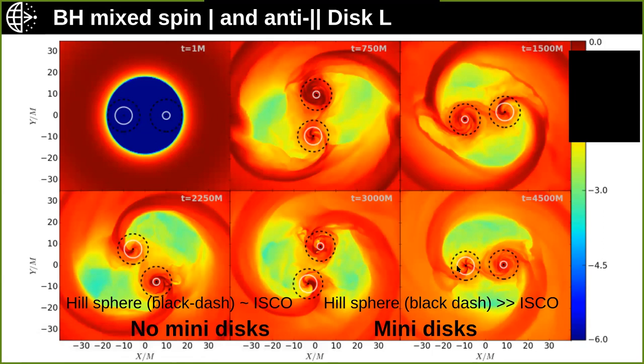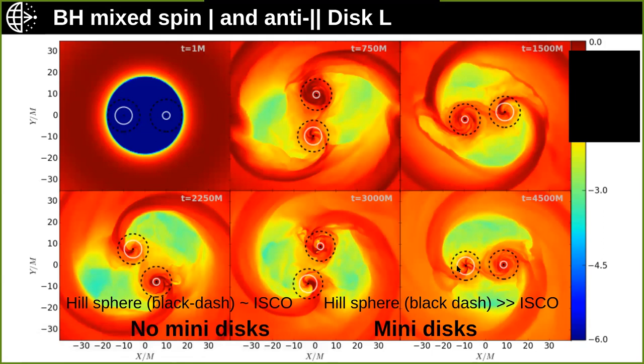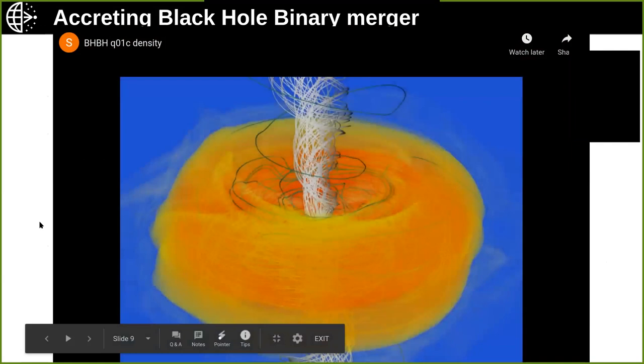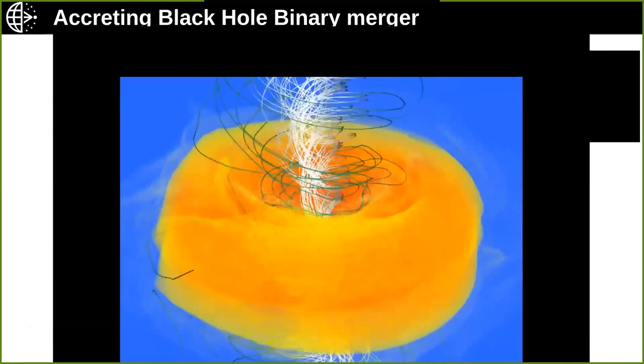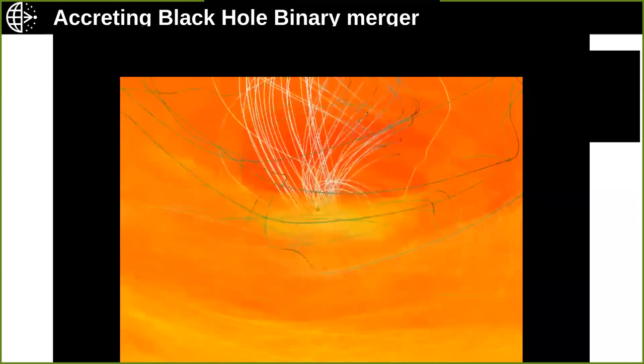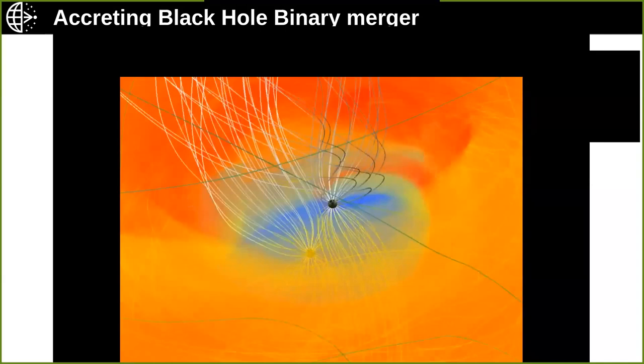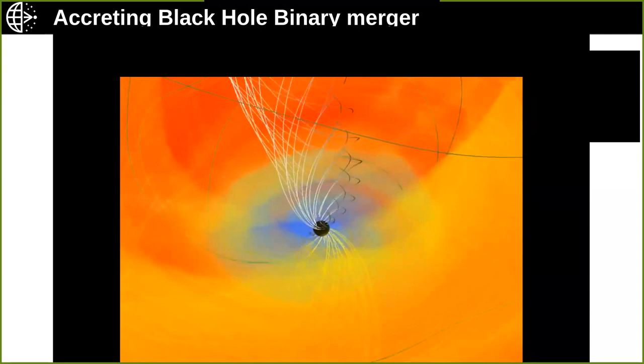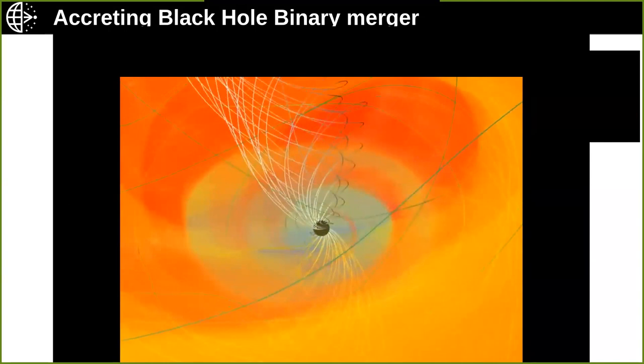Here is a movie of an accreting black hole binary merging in real time. The white magnetic field lines are anchored on the black hole horizons — it's an older simulation from 2014 but still state of the art in GR aspects. You can see the black holes getting closer and closer together, emitting gravitational waves as they merge, and then the simulation runs through the merger. By the end, the black hole has settled down to a Kerr solution, with interesting spin changes occurring.